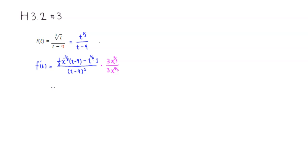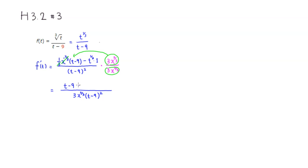Let's multiply out. The denominator is going to be 3t to the 2/3 power, multiplied by the quantity t minus 9 squared. Then for the numerator, I'm going to distribute to the first term first. We can cancel the 3 with this 3, and then t to the negative 2/3 and t to the 2/3 are reciprocals, so you can cancel those. What's left is actually only t minus 9. And a minus sign. Then if you distribute 3t to the 2/3 power to the second term...